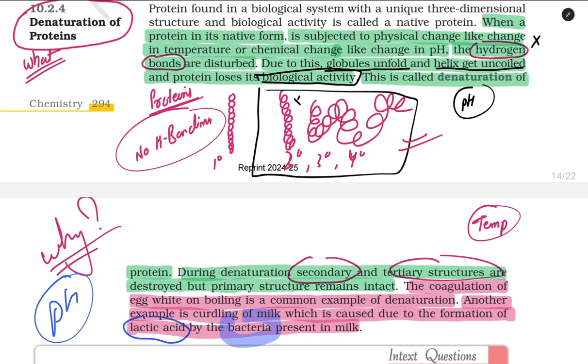Denaturation does not spoil the food. It is just a natural phenomenon. Whenever we heat protein or whenever we change the pH of the protein, its secondary, tertiary, and quaternary structures get disturbed because the hydrogen bonding gets broken down. The structures convert into primary structure, and the phenomenon is called denaturation of protein.